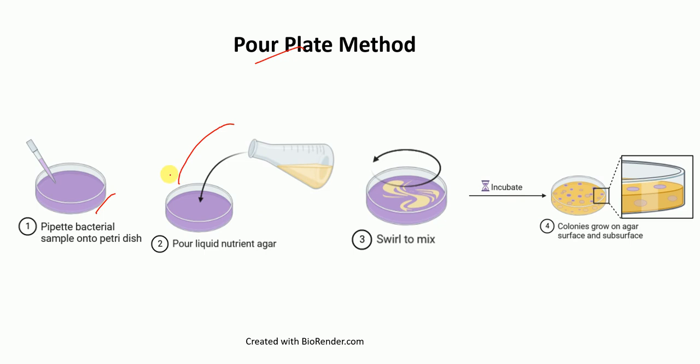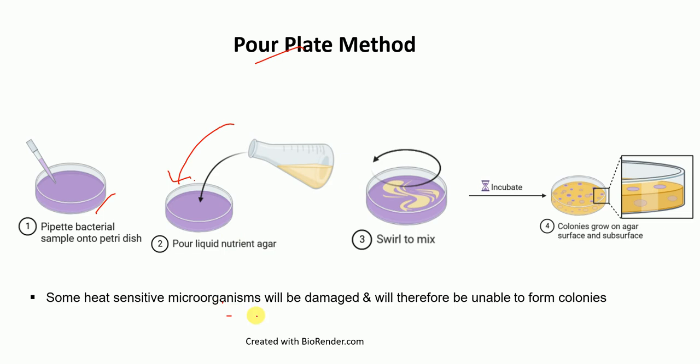One of the major disadvantages of the pour plate method is that heat-sensitive microorganisms will be damaged, and hence they will not be able to form colonies in the plate. This is one of the major disadvantages of pour plate method.